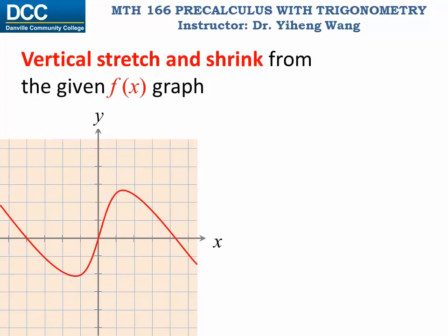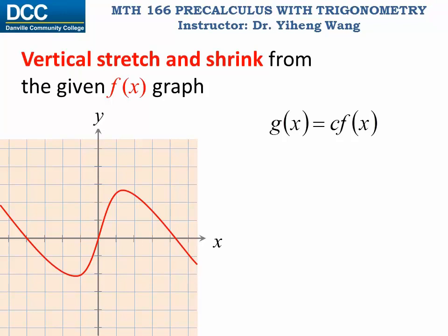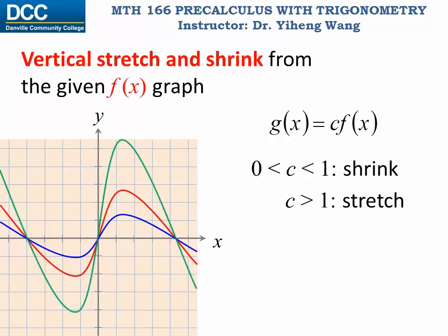Now let's look at another type of transformation: stretching and shrinking. If we wish to graph g(x) = c·f(x), depending on the value of c: if c is between 0 and 1 (for example 0.5 or 1/3), that indicates a vertical shrink. Notice that all these graphs have the same x-intercepts, because this change is applied to the output — there are only vertical changes, no change horizontally.